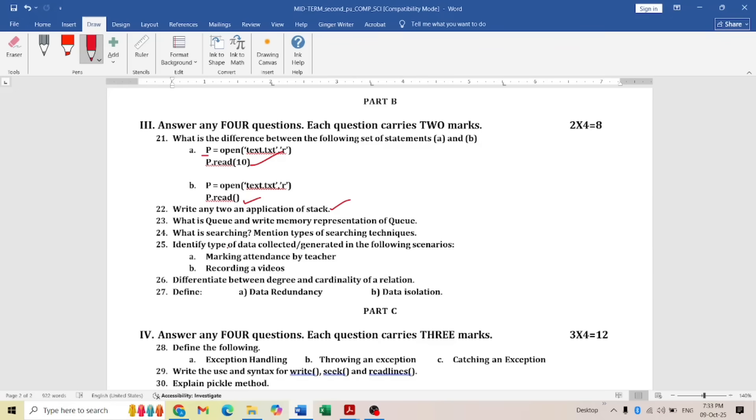Next question: identify the type of data collected or generated in the following scenario. First one: marking attendance by a teacher. This you have to mention is structured data. What are the things we collect when taking attendance: name of the student, class of the student, section, the date, and also whether the student is present or not. These are the details we will be collecting.